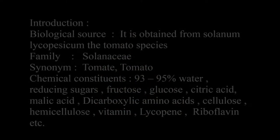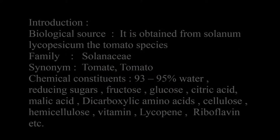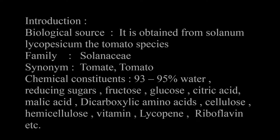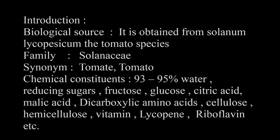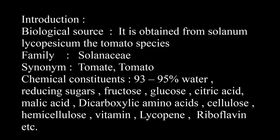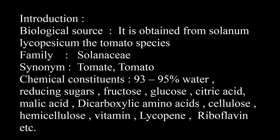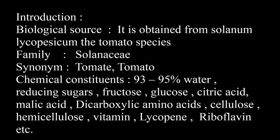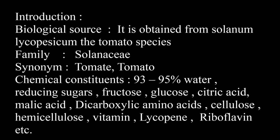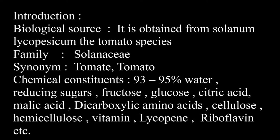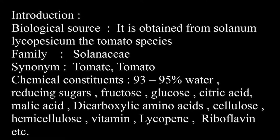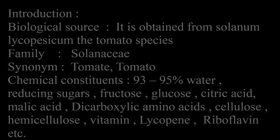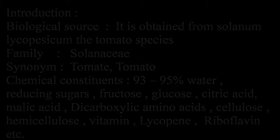Introduction: Biological source — it is obtained from Solanum lycopersicum, the tomato species, family Solanaceae. Synonyms: tomati, tomato. Chemical constituents: 93–95% water, reducing sugars including fructose and glucose, acids like citric acid and malic acid, dicarboxylic amino acids, cellulose, hemicellulose, vitamins, lycopene, riboflavin, etc.